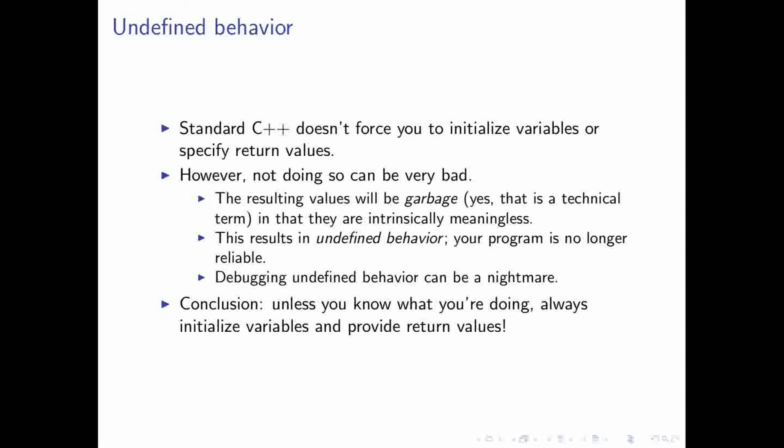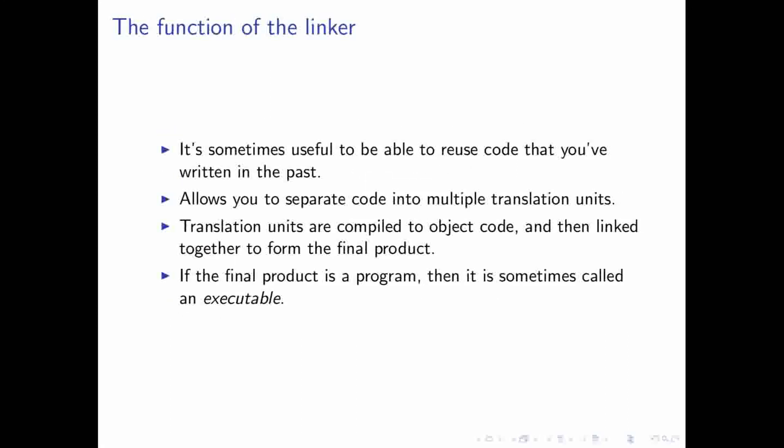Now we're here at this last step, and this step is something called linking. In linking, what we're doing is we're taking multiple compiled translation units, taking their object code, and we're putting them together. This could be useful if you want to reuse code, for instance. It also helps with the organization of your code, which can become very important in larger projects. If you remember, our compiler actually outputs object code for a single translation unit, and then we link them together to produce whatever our final product is, which is usually a program. It's also called an executable, and that's what we'll be calling programs from now on for the most part.